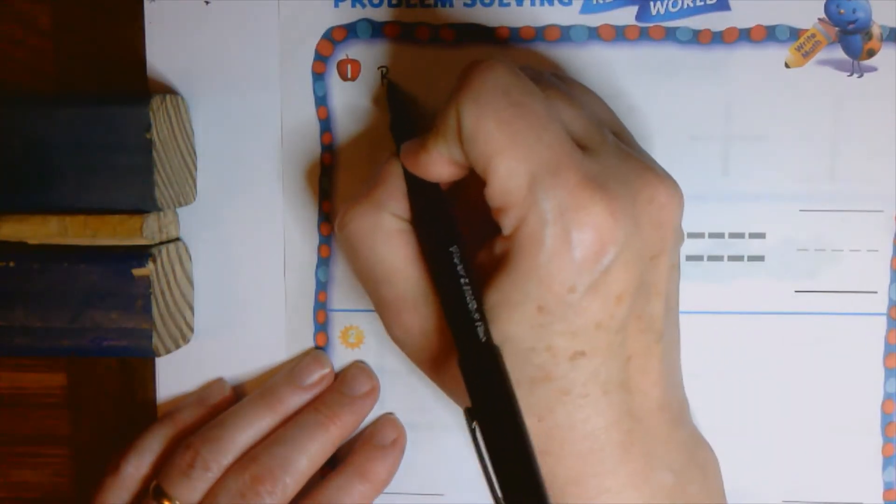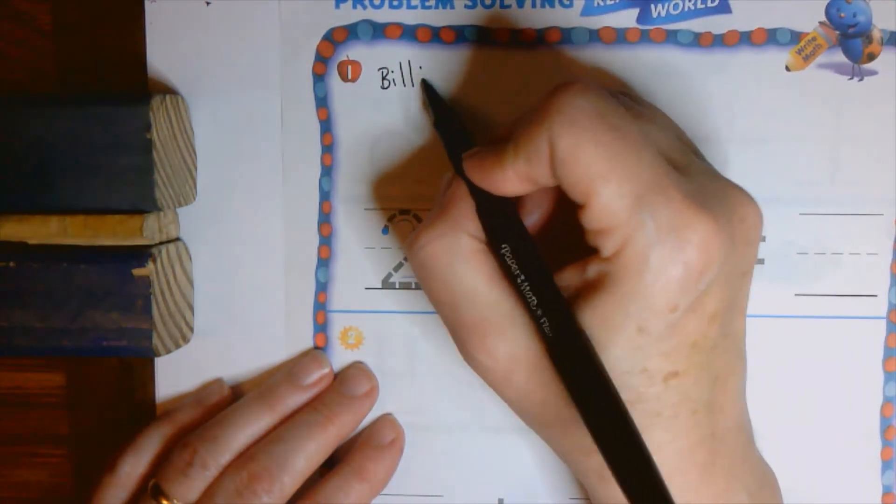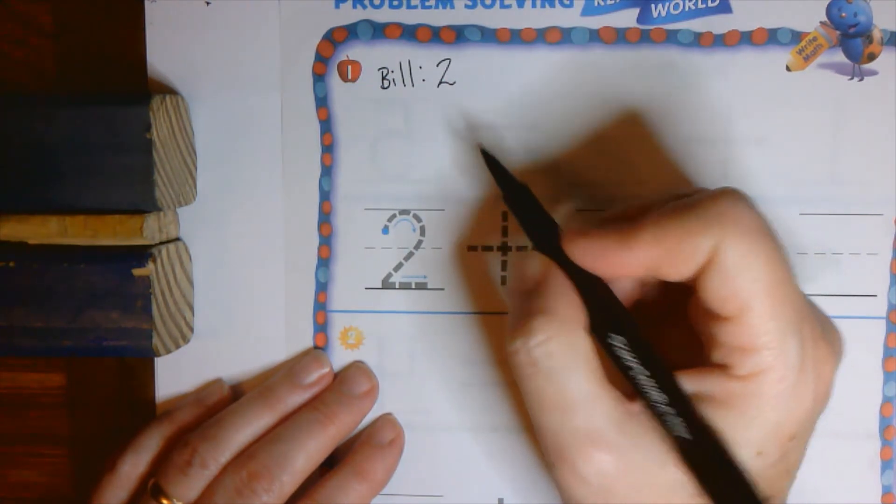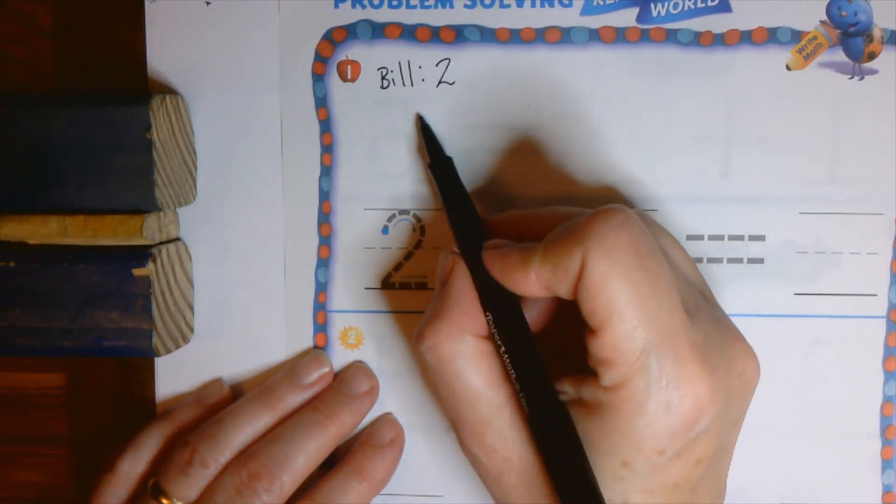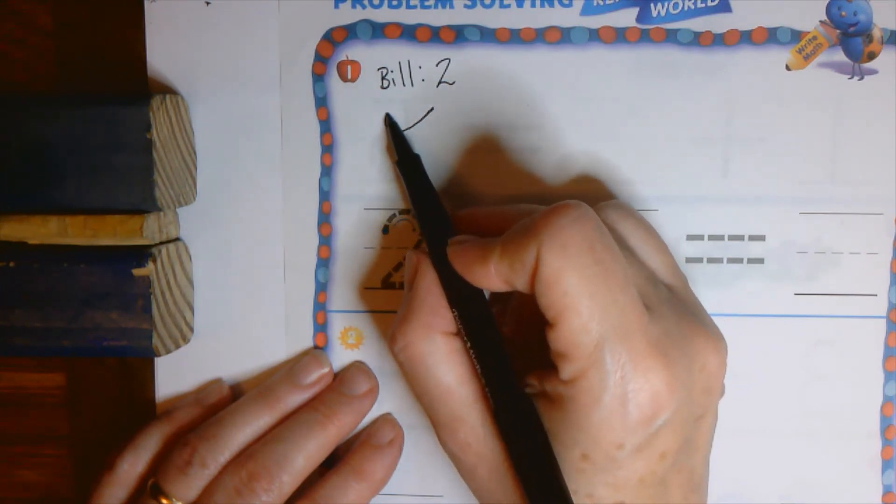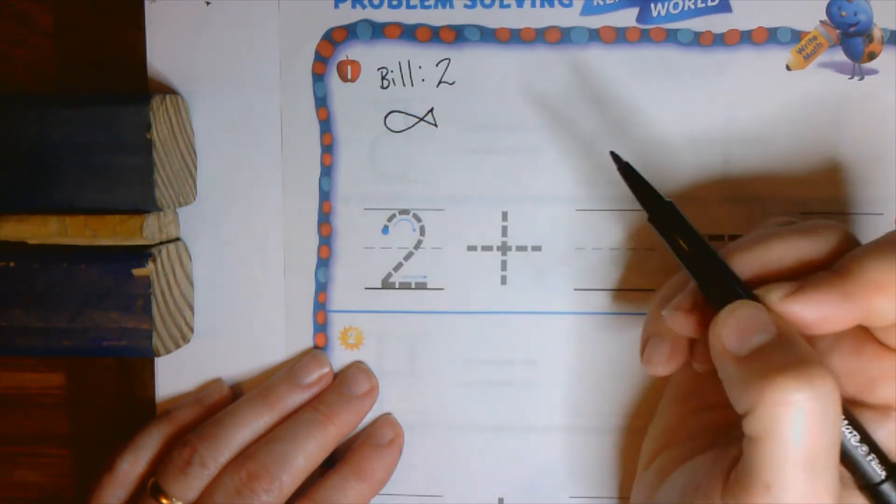Up here, there is a boy named Bill, and Bill is fishing. And Bill catches two fish. Now you can draw fish however you would like. I'm going to show you the way I do it. I start here. Here, I swoop down, up and around like that, and then connect it.